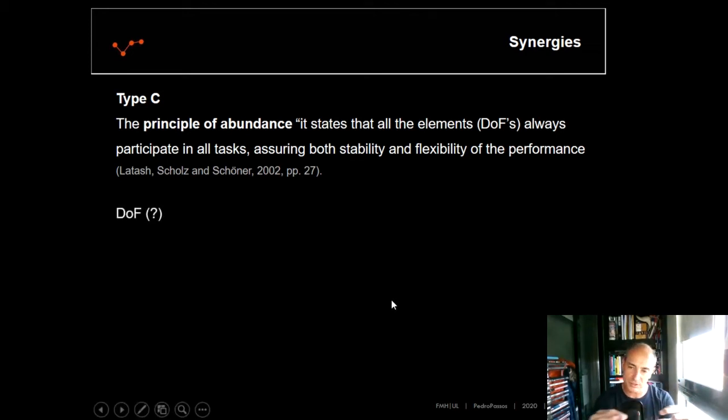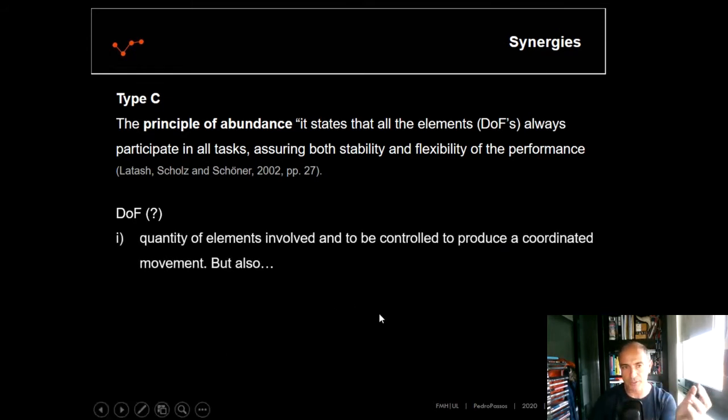Before moving on, I would like to make a small announcement regarding the degrees of freedom, because in the literature, you can find two different definitions. The first one is this: degrees of freedom can be analyzed as the quantity of elements involved and to be controlled to produce a coordinated movement. For instance, the quantity of muscles involved to do a flexion and extension of my arm.